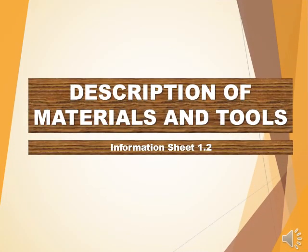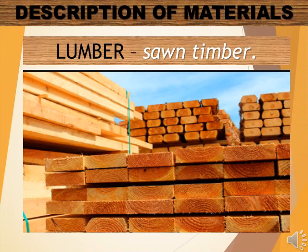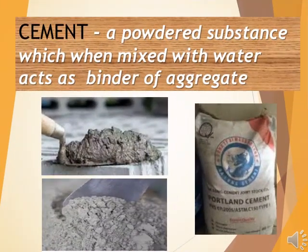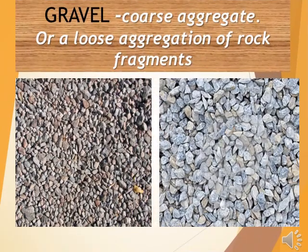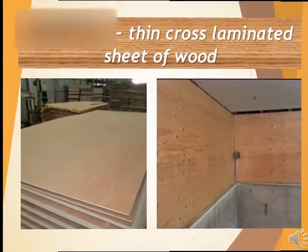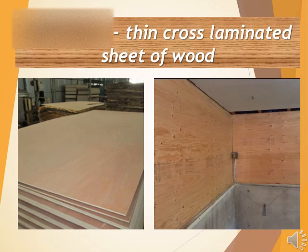Description of materials — Information Sheet 1.2. The first material used in carpentry is lumber; it is a sawn timber. Next is cement, a powdered substance which when mixed with water acts as a binder of aggregate. Next is sand, a fine gritty substance found on shores and deserts. Gravel is a coarse aggregate or loose aggregation of rock fragments. Plywood is a thin cross-laminated sheet of wood.